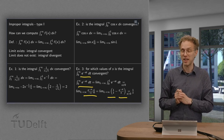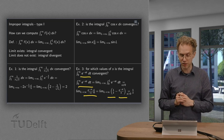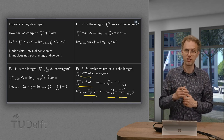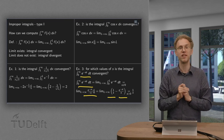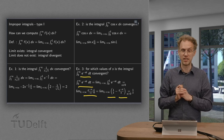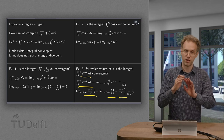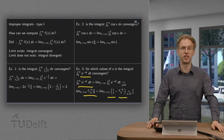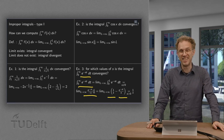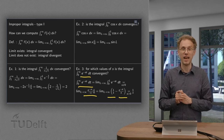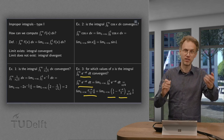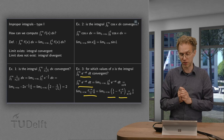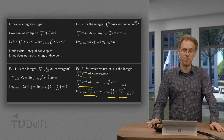Now we take l to infinity and must be careful. If s were negative, say minus 5, then we get e to the power of 5l, which blows up as l goes to infinity. If s is positive, say 3, we get e to the power minus 3l, which vanishes as l goes to infinity. So this limit only exists if s is positive, and then it vanishes and we end up with 1 over s. So for s positive, the integral is convergent and converges to 1 over s. If s is negative, the integral is divergent. If s equals 0, we get e to the power 0 equals 1, and integrating that from 0 to infinity also blows up, so for s equals 0 we are also divergent. Our integral converges only for s greater than 0.